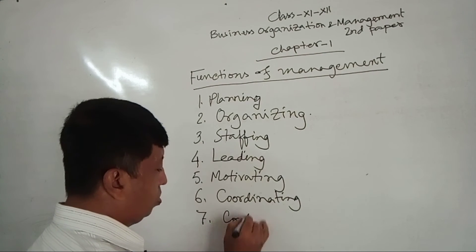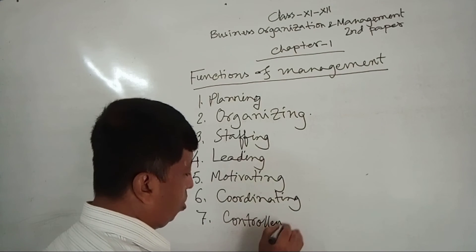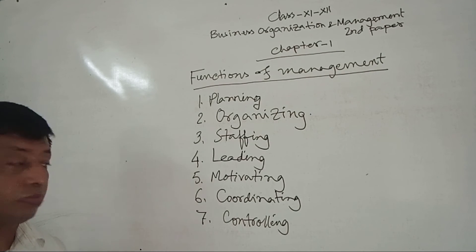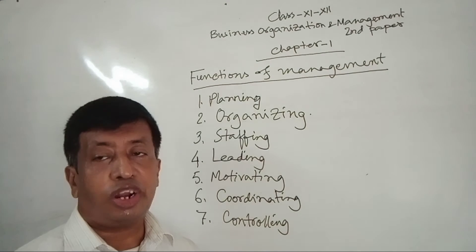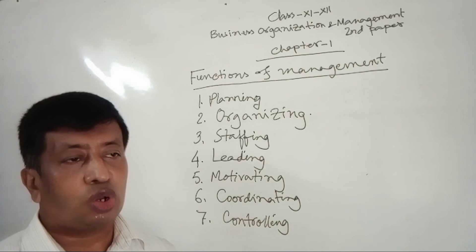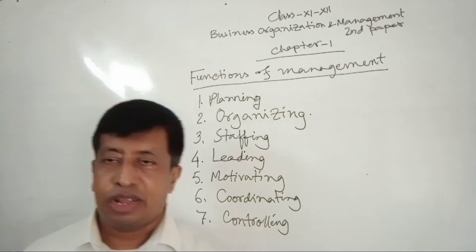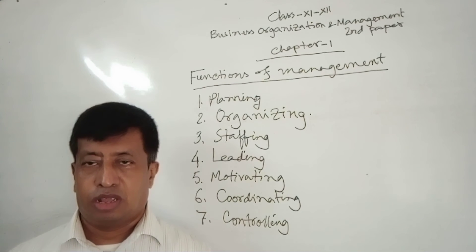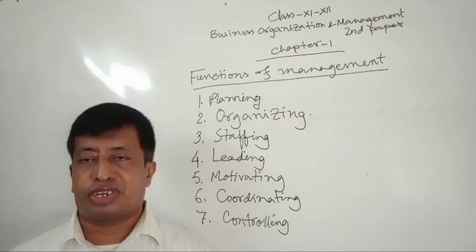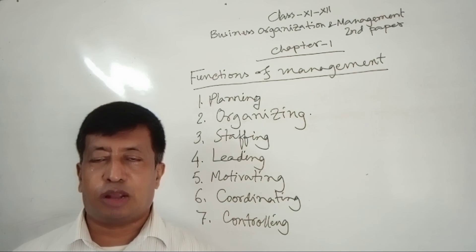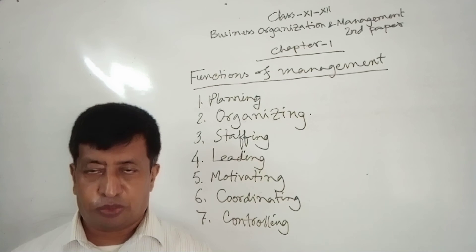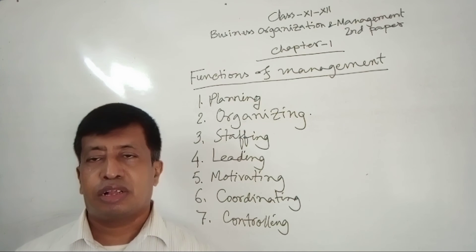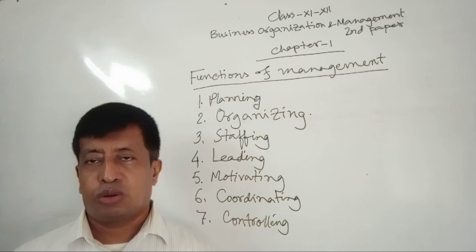Controlling. Controlling means to control the organizational tasks of the employees or workers. First, we observe the employees' or workers' tasks. If we find a problem, then we solve or correct the problem. That is called controlling.